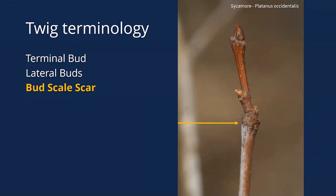There's a scar all the way around the twig — we call that the bud scale scar. That's the location of where last year's terminal bud was, marking the initiation of this year's growth. Sometimes you can use those to count back and see how old a twig is. These bud scale scars usually encircle the entire twig and are pretty prominent, helping you identify a tree as well.